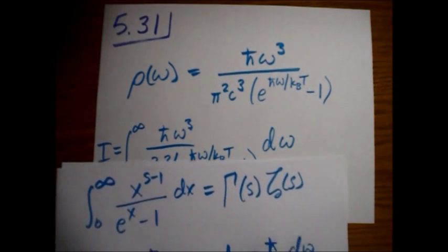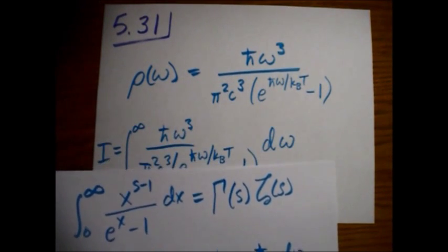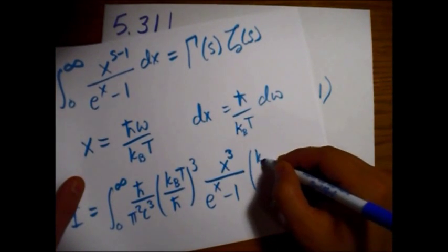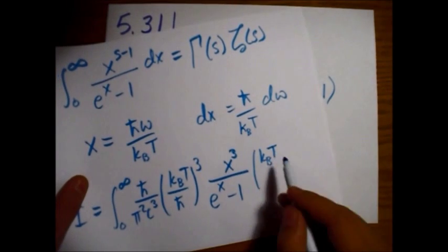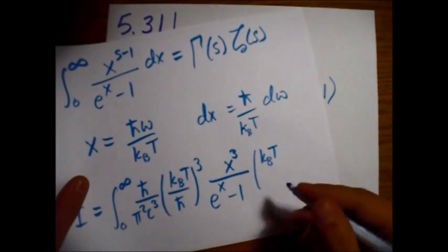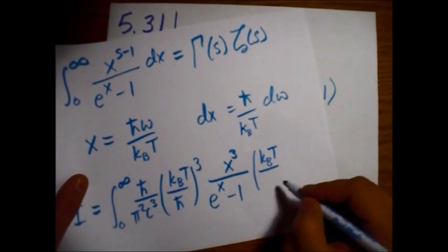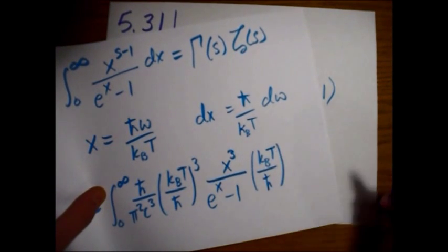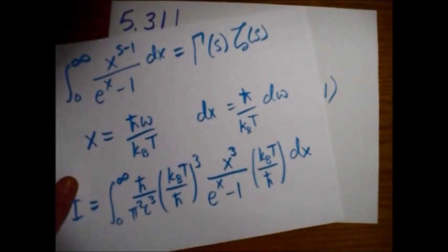And then we need our d omega to be changed to dx. So we have another factor of kBT. You can see that the kBT is starting to add up, right? Because we need to get our T to the fourth power for our Stefan Boltzmann.